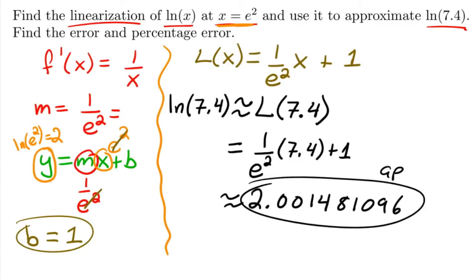This is the approximation. Now, if I find my actual value—because I need to find this to find the error—if you plug in ln(7.4) into your calculator, you're going to get 2.00148. Notice, very close.